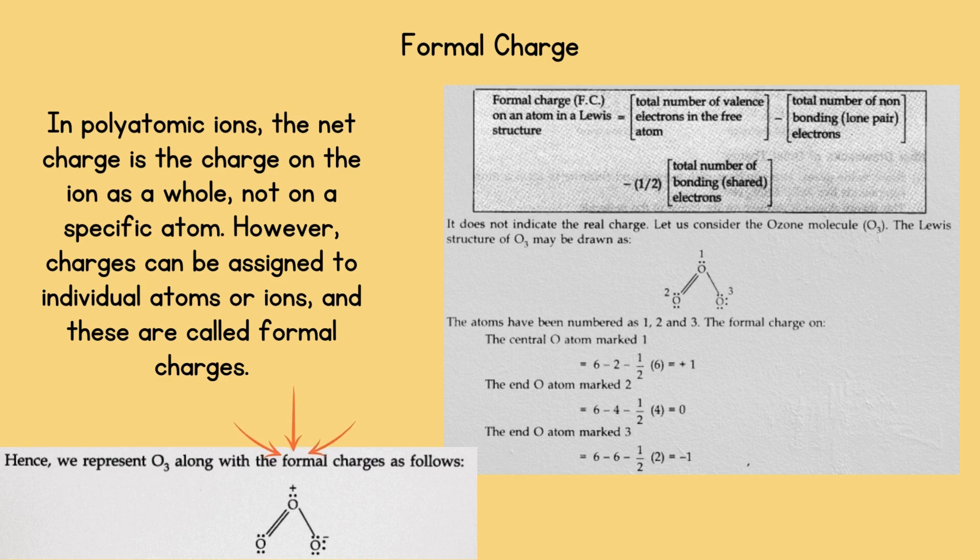Let us consider the ozone molecule O3. The atoms have been numbered as 1, 2, 3, so the central atom O marked 1 has 6, which is total number of valence electrons in the free atom subtracted by 2 which is total number of non-bonding electron lone pair, subtracted by 1/2 times 6, which is total number of bonding electrons shared electrons, equals plus 1.